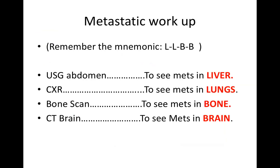Metastatic workup includes ultrasound abdomen, chest X-ray, and bone scan to see metastasis in liver, lungs, and bone. Alternatively, you can have a CT chest, CT abdomen, and CT brain to see metastasis in these areas.